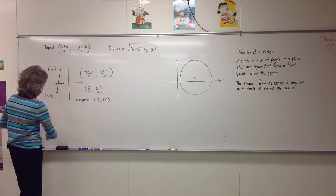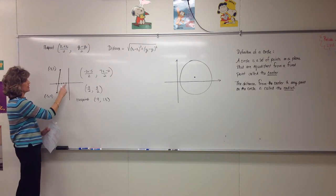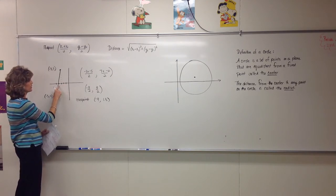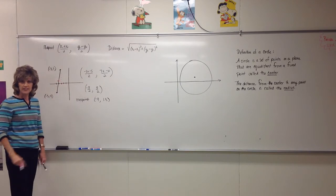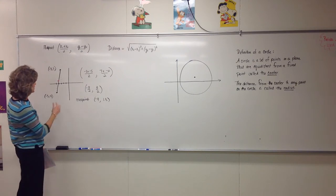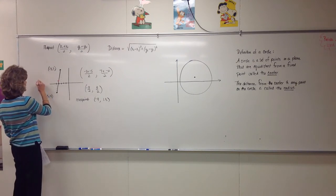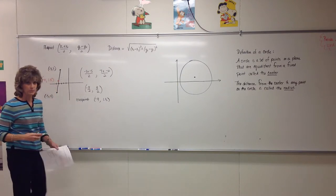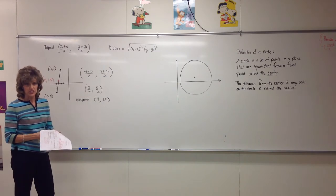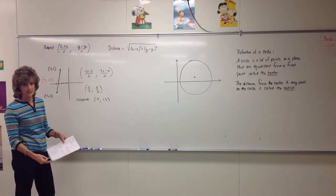Now let's graph that and see if it seems reasonable. Going left four and up 1.5 puts me about right here. It looks reasonable from our graph. So the midpoint is negative four, comma, 1.5. To find a midpoint, you average the x's and you average the y's.